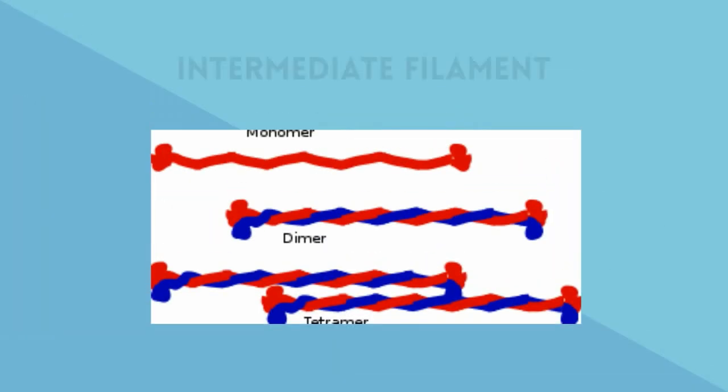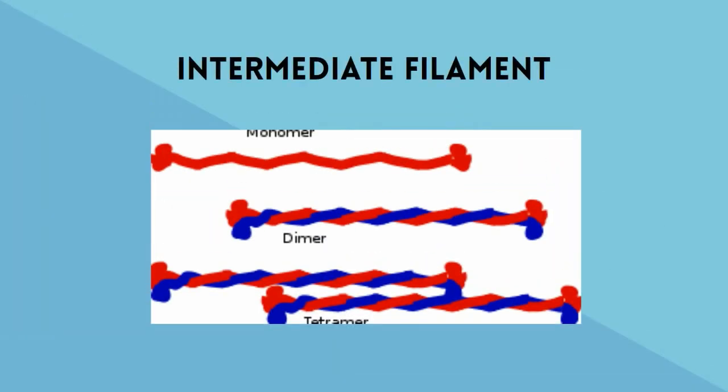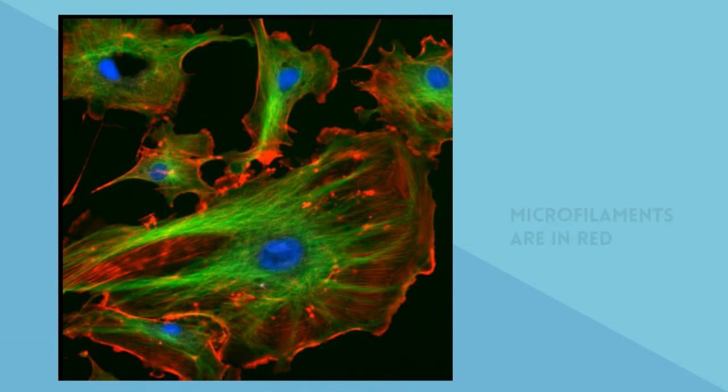The intermediate filaments are medium in size and help structure and support the cell. And finally, the microfilaments are the smallest and they are found in red in this picture.